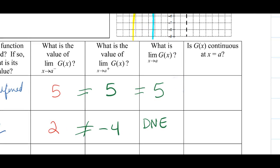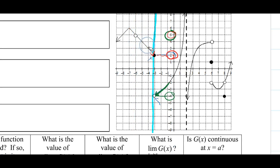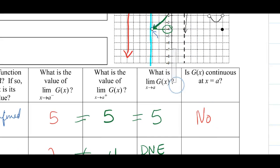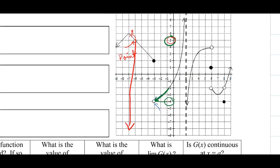Looking at the graph visually: at x = −6 we have a point discontinuity — if I'm a little person walking along, I wouldn't want to walk along a bridge with a big hole in it. So this is not continuous. At x = −3, as I approach, I would have to jump way down to continue along the function — this is a jump discontinuity. It is also not continuous.